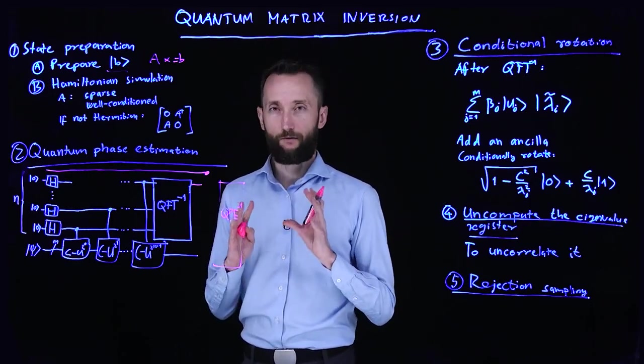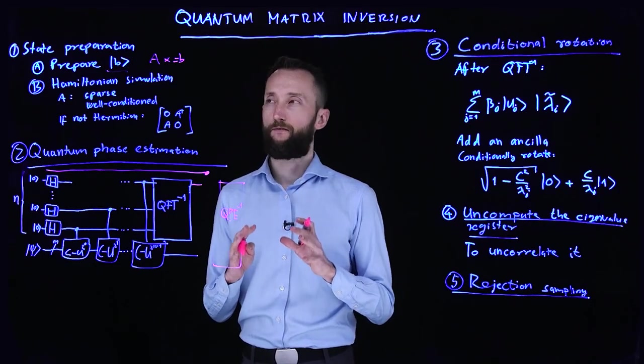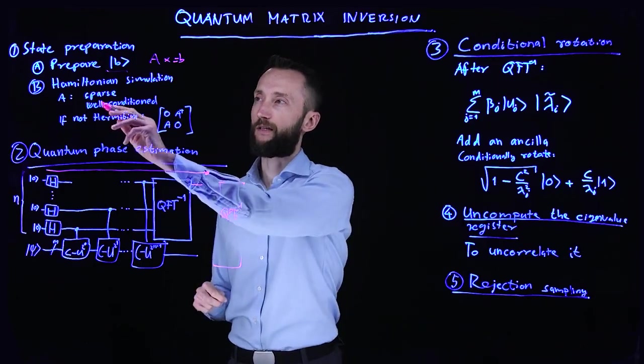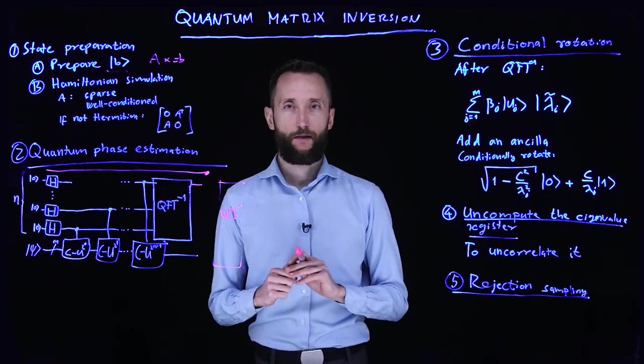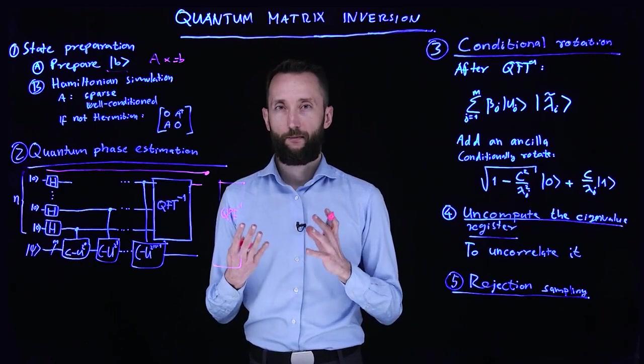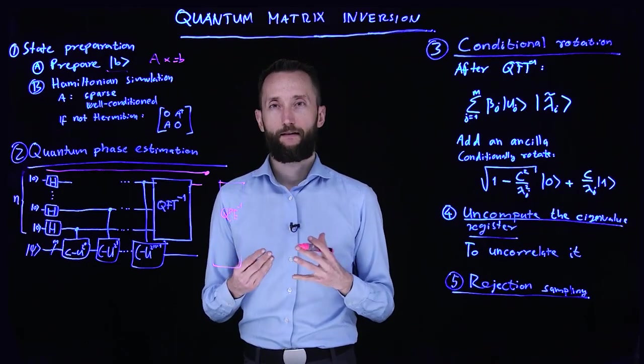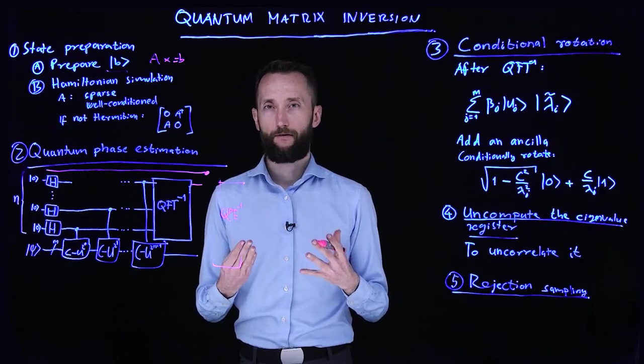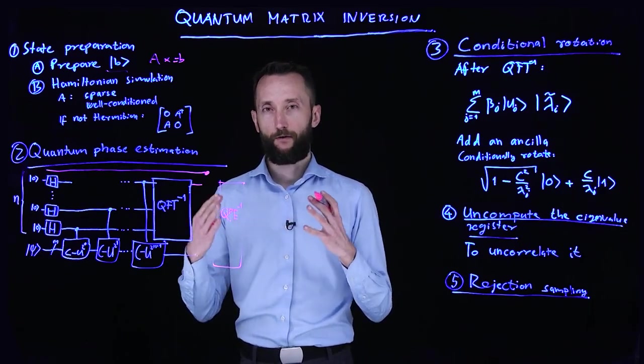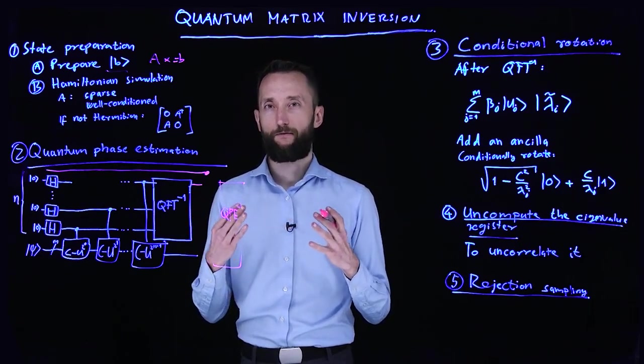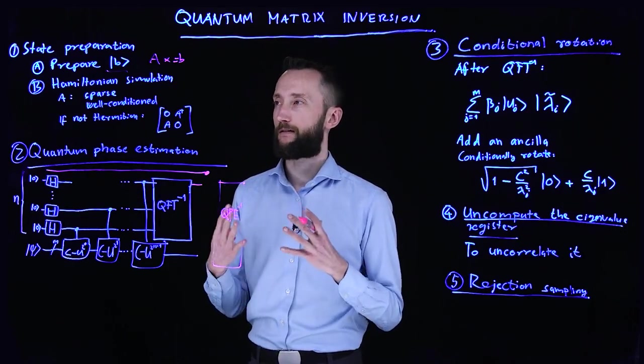So in this original formalism of quantum matrix inversion, this matrix has to be sparse and well-conditioned. So sparse means that it does not have many non-zero entries. And well-conditioned means that it doesn't have vanishing eigenvalues. So the ratio of the biggest and the smallest eigenvalue is well-behaved. It's not crazy.